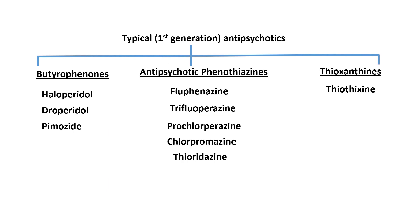Here is a classification of the typical or first-generation antipsychotics. They are broadly classified into butyrophenones, antipsychotic phenothiazines, and thioxanthenes. The most famous example of the butyrophenones is haloperidol. The antipsychotic phenothiazines include chlorpromazine, which was in fact the first ever antipsychotic drug.